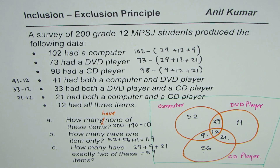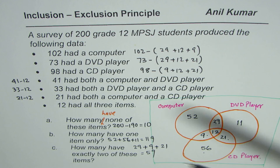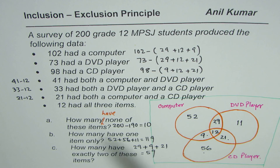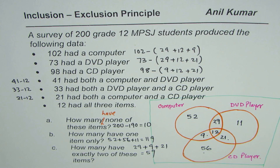That's how you solve such questions. The important thing is to analyze how many circles you need — since there are three items, use three overlapping circles. To fill in the data, always start from the area common to all sets and work outwards. That is the best approach for solving inclusion-exclusion problems. I hope that helps. Thank you, and all the best.